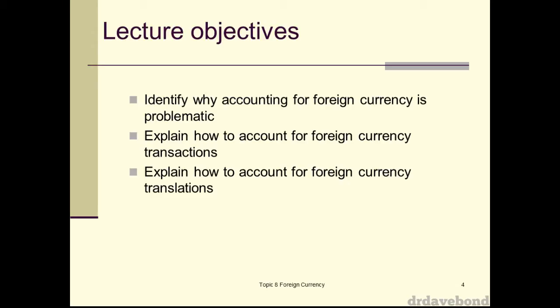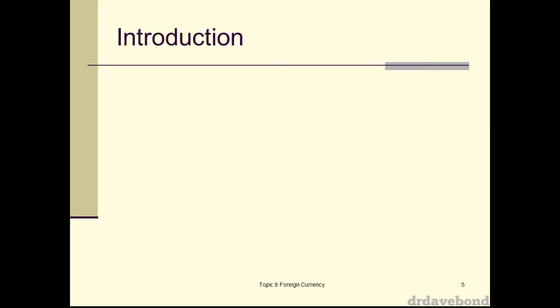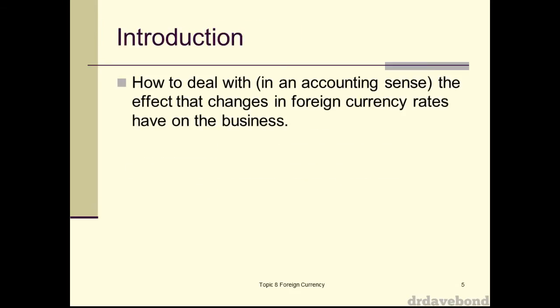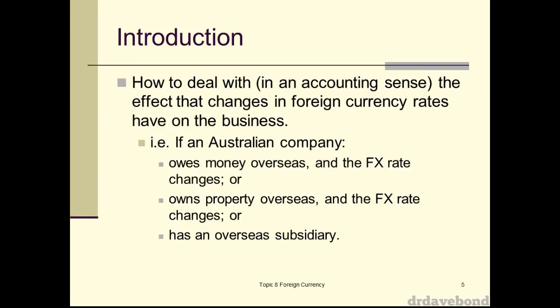The other aspect is when you have a foreign subsidiary whose accounts are denominated in a different currency. If you're an Australian company presenting in Australian dollars with a New Zealand subsidiary presenting in New Zealand dollars, you can't just add those two things together in consolidation. You need to make some adjustment, and that's what we'll look at in the second part — how to deal with the effect that changes in foreign currency rates have on the business.